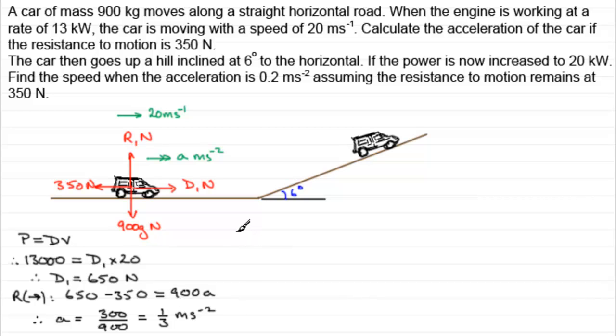Okay. Well that's the first part done. Now we'll move on to the second part here. As the car goes up this hill here inclined at 6 degrees to the horizontal. We're told that if the power is now 20 kilowatts, we've got to find the speed when the acceleration is 0.2 meters per second per second. Assuming that the resistance to motion remains the same as before, 350 newtons. So let's mark some forces first of all on the vehicle.